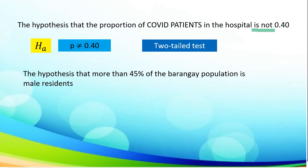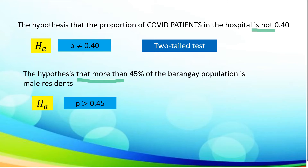Next statement: the hypothesis that more than 45% of the barangay population is male residents. To translate it, under the alternative hypothesis we have P is greater than 0.45, and it falls under right-tailed test.